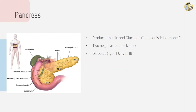The pancreas produces insulin and glucagon, which decrease and increase the level of glucose in the bloodstream respectively. Since their effects are directly opposite, they are said to be antagonistic hormones. Each hormone works within a negative feedback loop to either store glucose as glycogen or break it down to increase concentration. Diabetes is a disorder that makes it difficult to control blood sugar level. Type 1 is caused by insufficient insulin production by beta cells, and type 2 is caused by a problem in the receptor and signal transduction in the target cell.